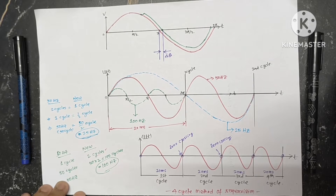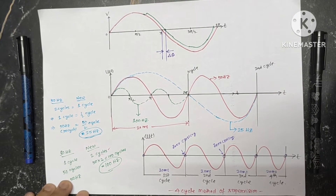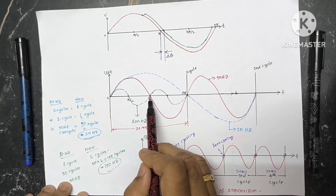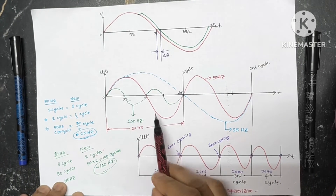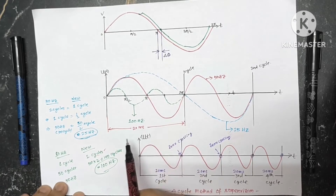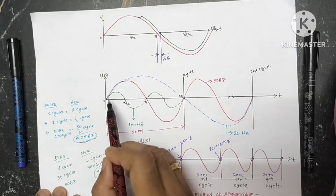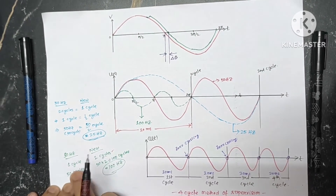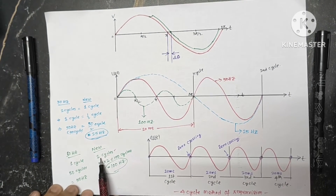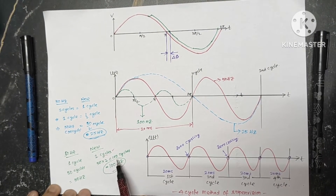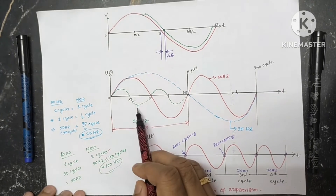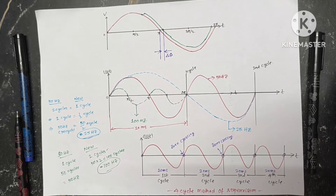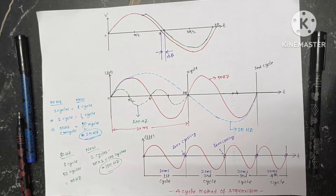If I reduce the time — instead of 20 milliseconds, suppose the new frequency completes one cycle in 10 milliseconds. The red cycle is 20 milliseconds and the green one completes in 10 milliseconds. In the time the red completes one cycle, the green completes two cycles. So in 50 cycles of the original, the new one crosses 100 cycles — that means it is 100 Hz. You can see that increasing or decreasing the 20 millisecond timing automatically causes frequency variation.